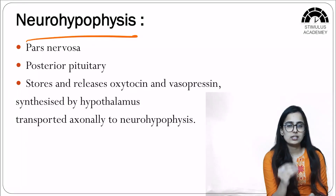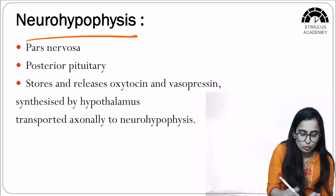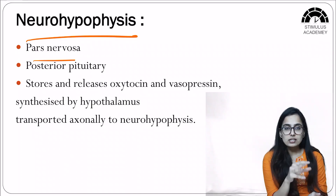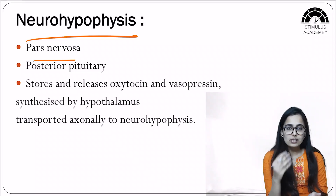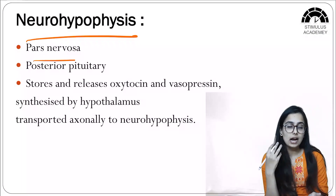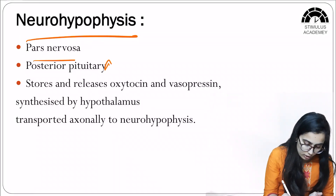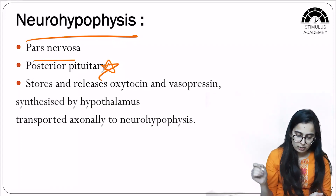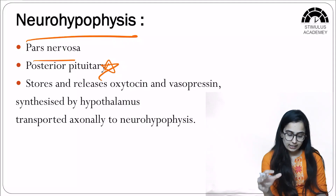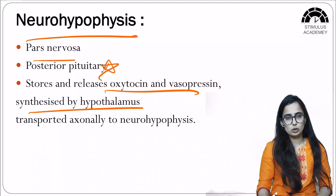Neurohypophysis, as the name suggests, is related to the nervous system and is also known as pars nervosa or the posterior pituitary. The neurohypophysis stores and releases oxytocin and vasopressin, which are synthesized by the hypothalamus.